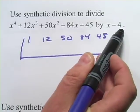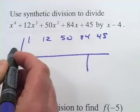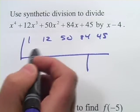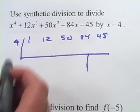And here we have x minus 4. Remember, when you're doing synthetic division, you actually divide by the root, the zero, so it'll be a positive 4 we put over here.